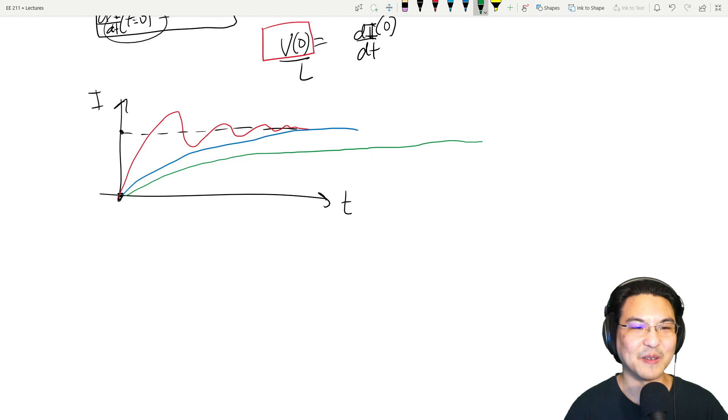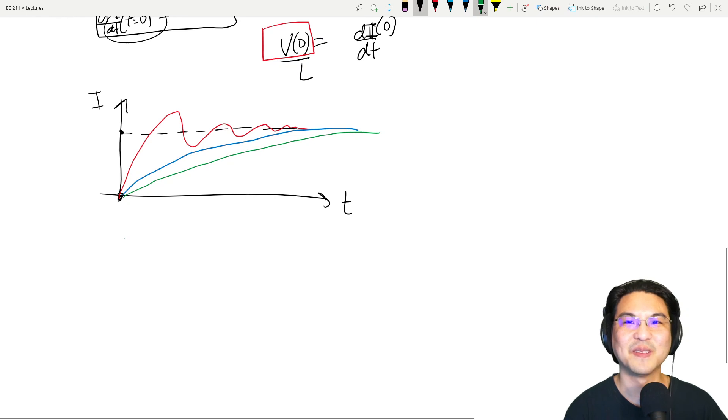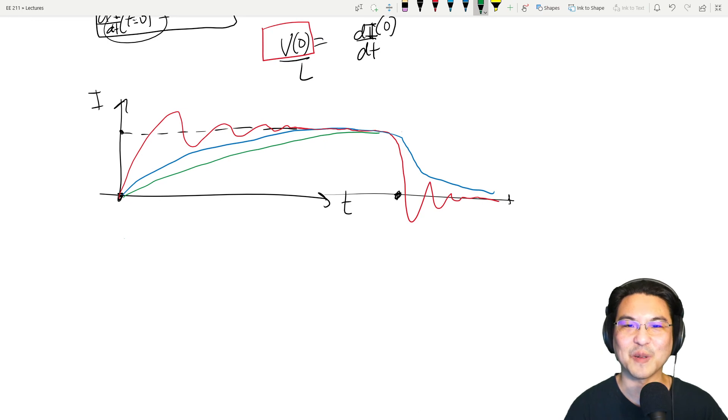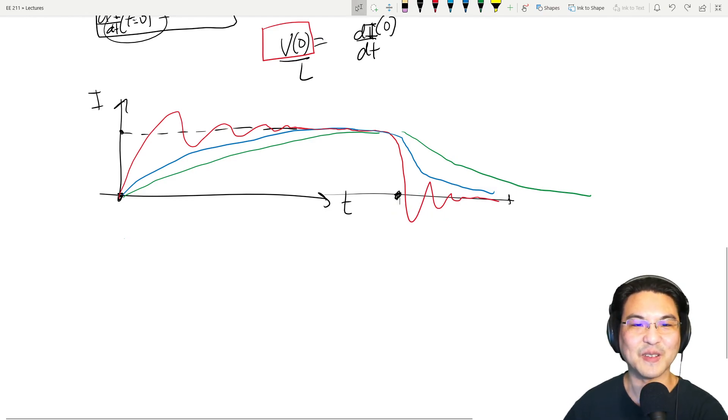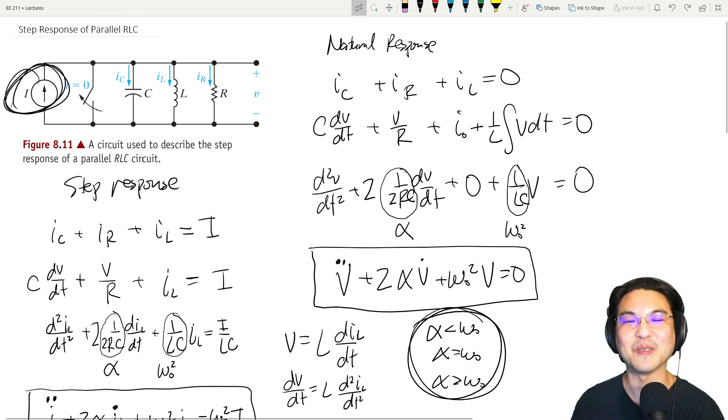And now imagine whatever current it is, now it's sitting there for a long time. And then you do a natural response. So then now it wants to go down to zero. Then the underdamped response will be more like this. And the critically damped response like this, and the overdamped response like that. It just takes longer to settle. So I hope that's helpful. All right, so give some of these problems a try and let me know if you have questions. I'll see you in the next video.